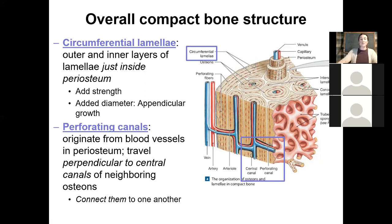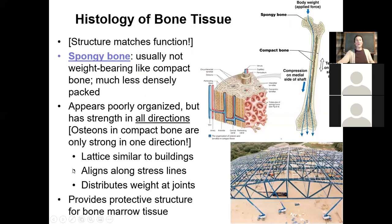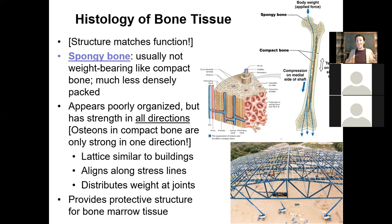So let's look at spongy bone. Remember that structure always matches function. The compact bone is the weight-bearing portion of the bone and has to have really densely packed fibers. Spongy bone has a little bit of a different function — it is in fact really strong, just not the same as the compact bone. It's usually not weight-bearing like the compact bone, and therefore it doesn't have to be as densely packed. We're talking about all the way on the inside — this looks like a sponge. Even though these little spicules — little riblets of bony tissue within the spongy bone — look completely disorganized, they are very highly organized and really strong.